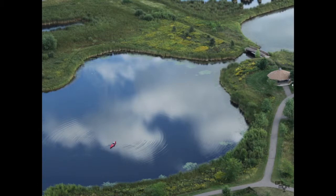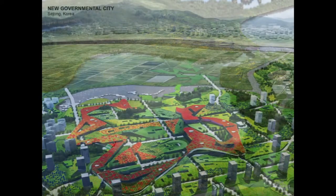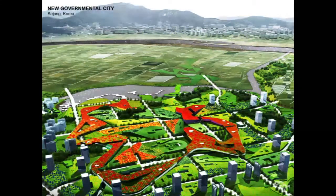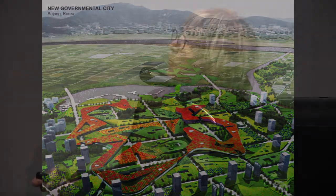One last example, a quick one. We won an international competition for a government city in Sejong, Korea. A plan by the president of Korea was to move all of the government out of Seoul. He was stopped from doing that, but then he pursued moving half of the government out of Seoul into Sejong.